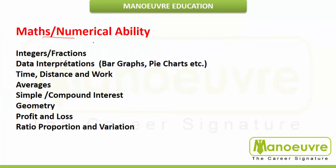Now moving to the Math and Numerical Ability section. The first topic is integers and fractions, second is data interpretation and bar graphs — which includes bar graphs, pie charts, etc. — and then time, distance and work, which almost always has questions in the exam.